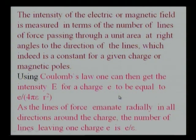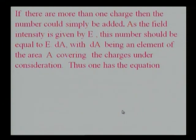As the lines of force emanate radially in all directions around the charge, the number of lines leaving one charge is e upon epsilon, epsilon being the dielectric constant. If there are more than one charge, then the number could simply be added. As the field intensity is given by E, this number should be equal to E dot dA, dA being an element of the area covering the charges under consideration.